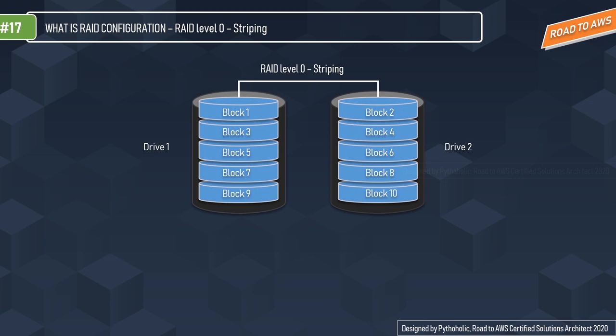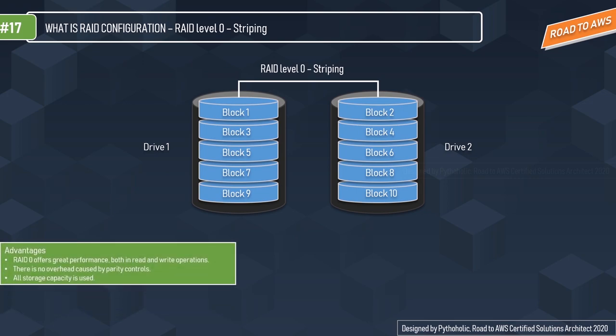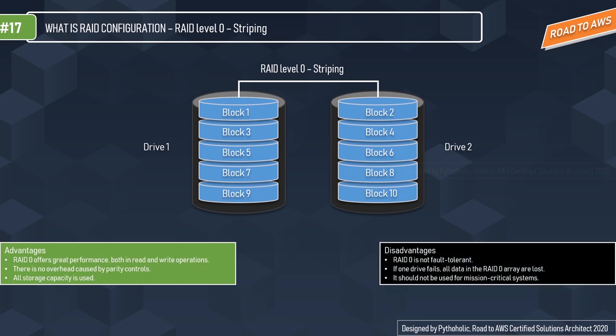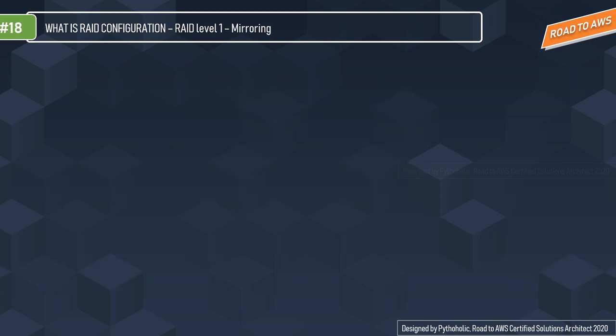RAID 0 offers great performance in both read and write operations, with no overhead caused by parity controls, and all storage capacity is used. The disadvantage is that RAID 0 is not fault tolerant — if one drive fails, all the data in the RAID 0 array is lost. It should not be used for mission-critical systems.